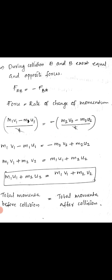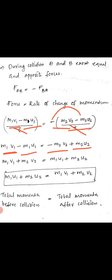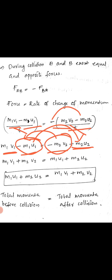Since action and reaction forces are equal and opposite, we have M1V1 minus M1U1 equal to minus M2V2 plus M2U2. Rearranging both sides: M1V1 plus M2V2 equals M1U1 plus M2U2. That is, M1U1 plus M2U2 is equal to M1V1 plus M2V2.